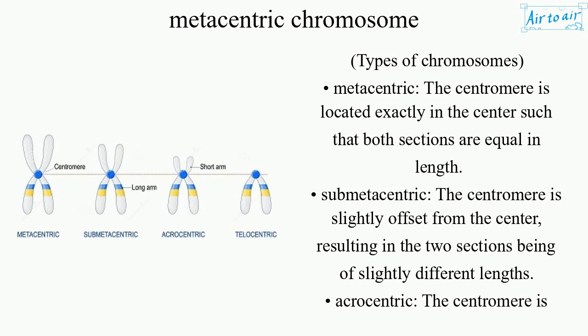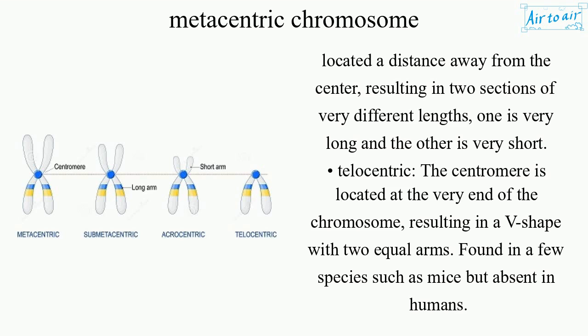Acrocentric: the centromere is located a distance away from the center, resulting in two sections of very different lengths — one is very long and the other is very short. Telocentric: the centromere is located at the very end of the chromosome, resulting in a V-shape with two equal arms, found in a few species such as mice but absent in humans.